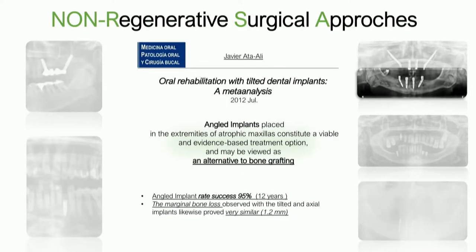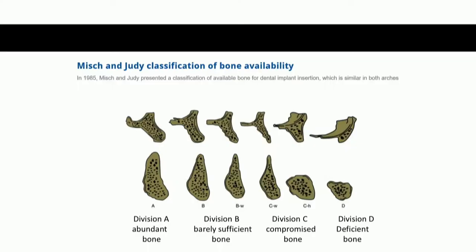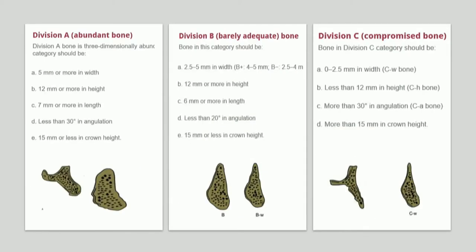Angled implants are an alternative to bone grafting, showing a success rate around 95% after 12 years, with marginal bone loss similar to axially placed implants. According to the Mitch and Judy classification, there are four bone divisions. We always prefer to work with Division A — enough bone for standard implants — but unfortunately we must also work with other divisions.